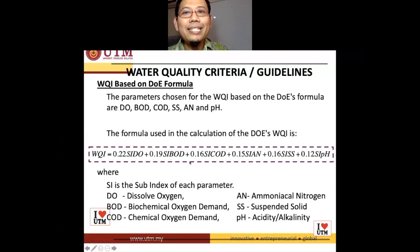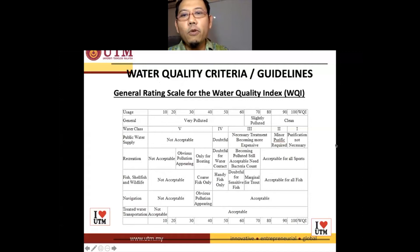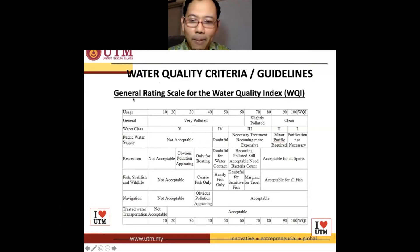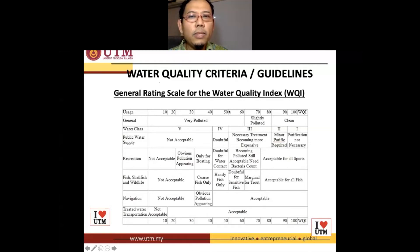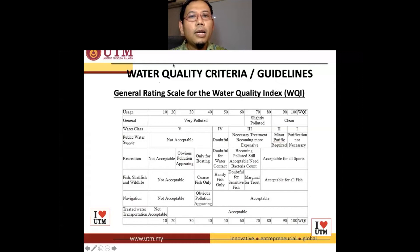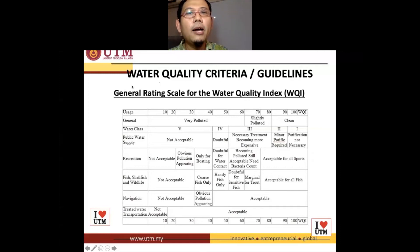Once you have obtained the value, it has to be between 0 and 100. If you get greater than 100, that means you have done your calculation wrongly. If you have a negative number, again, you have done something very wrong. Anything from 90 to 100 is class 1, 80 to 90 is class 2, 50 to 80 is class 3, 40 to 50 is class 4, and below 40 is class 5. Class 1 and 2 are suitable for all uses including fish and so on, while class 5 is only suitable for navigation.